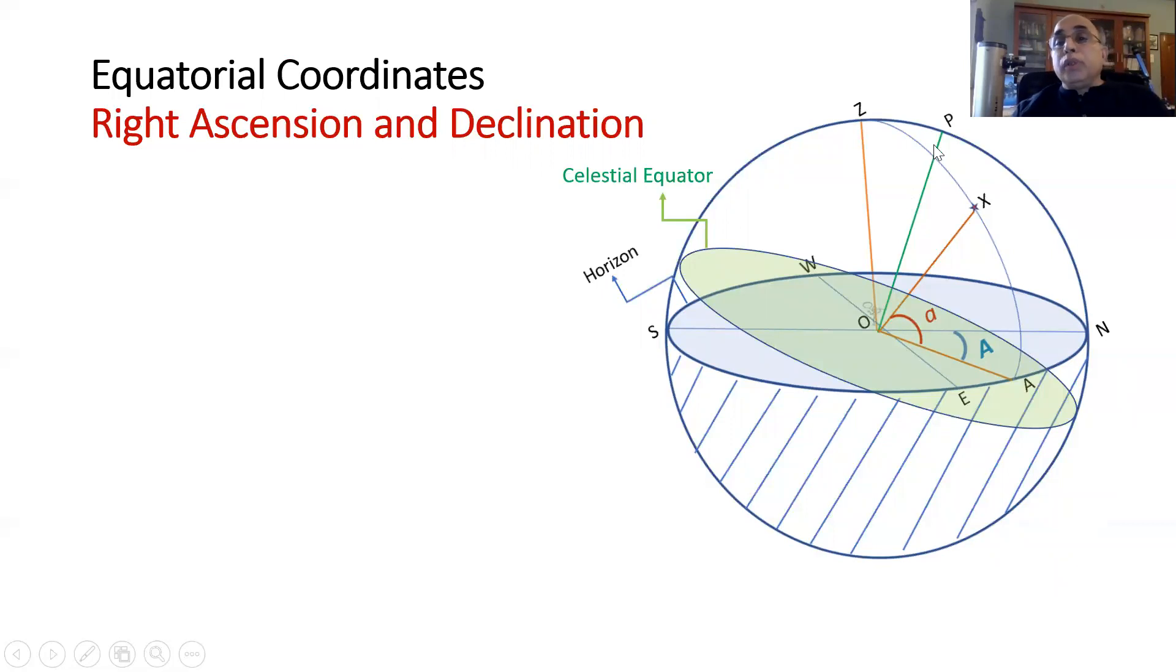In which instead of altitude and azimuth we use something called right ascension and declination. In this, we take the OP axis where O is the foot of the observer, P is the position of the polestar, and we look at the plane which is perpendicular to OP and extend it to meet the celestial sphere.